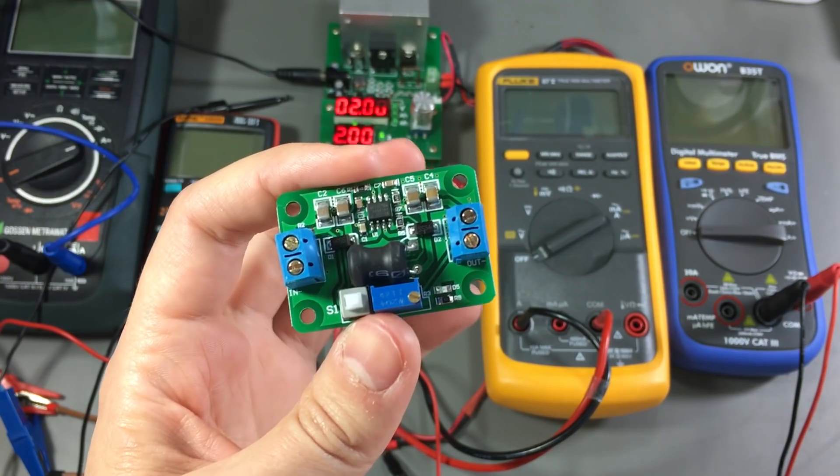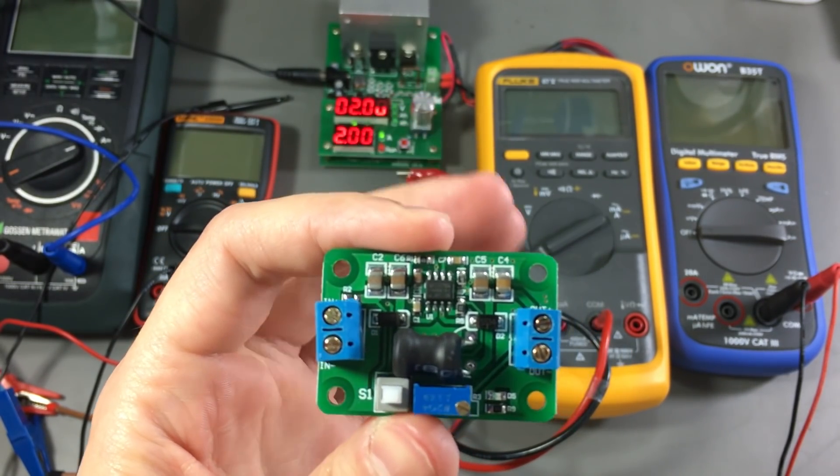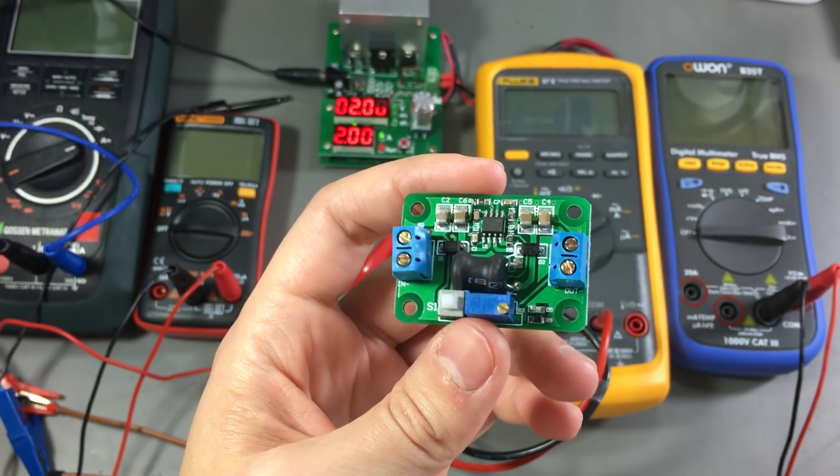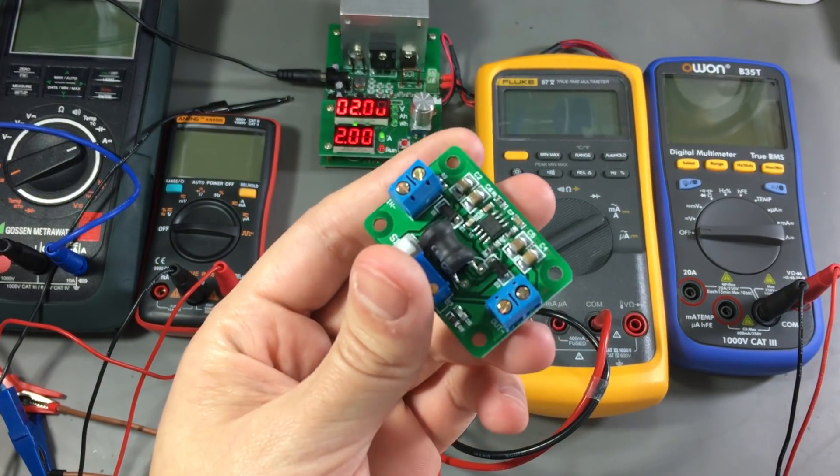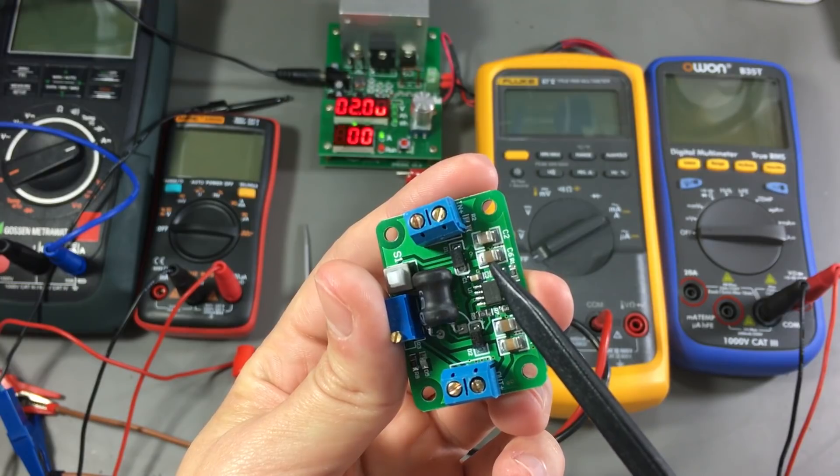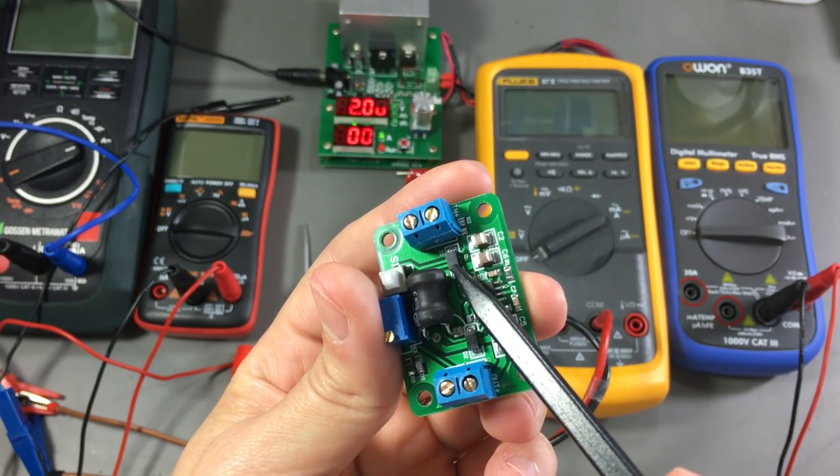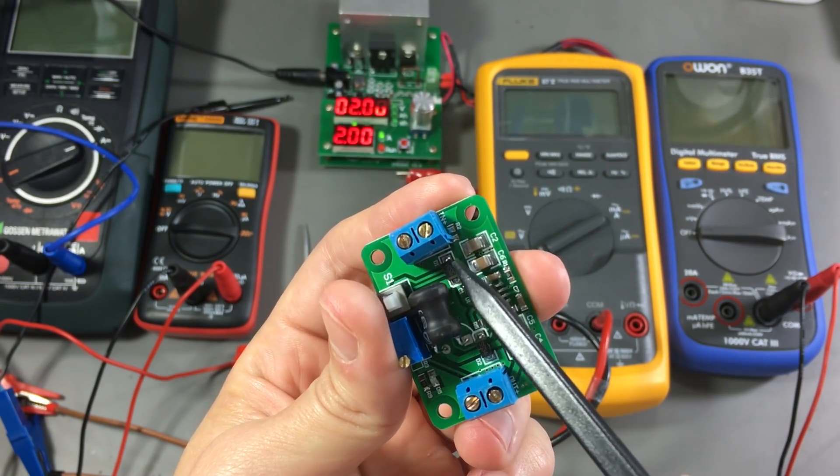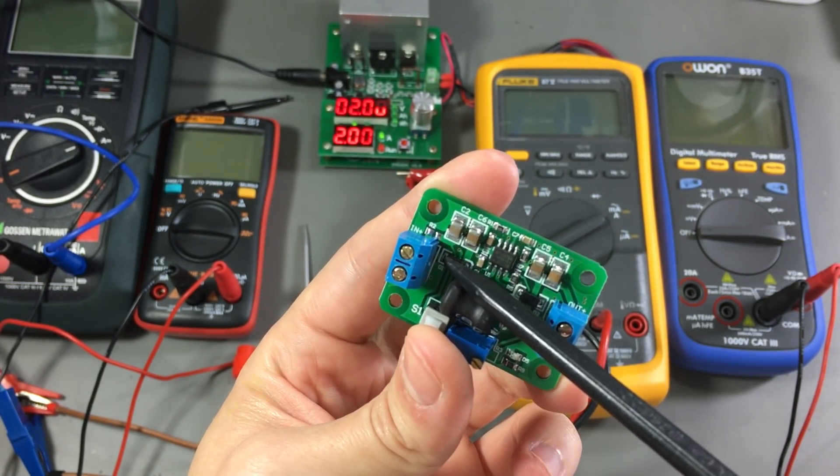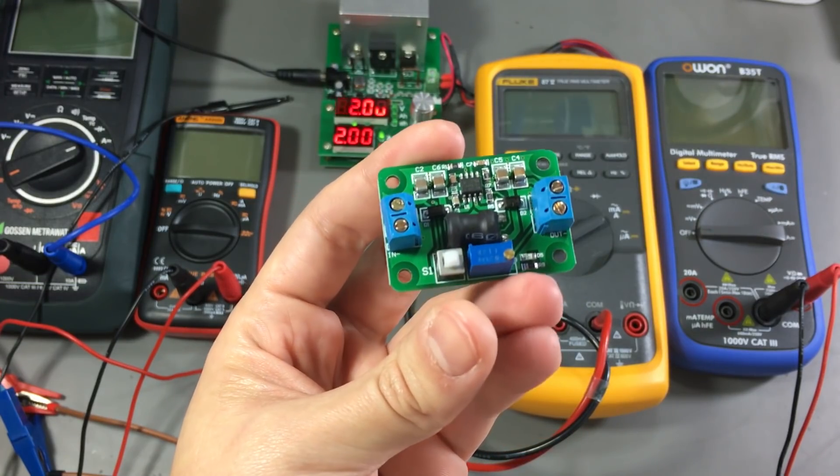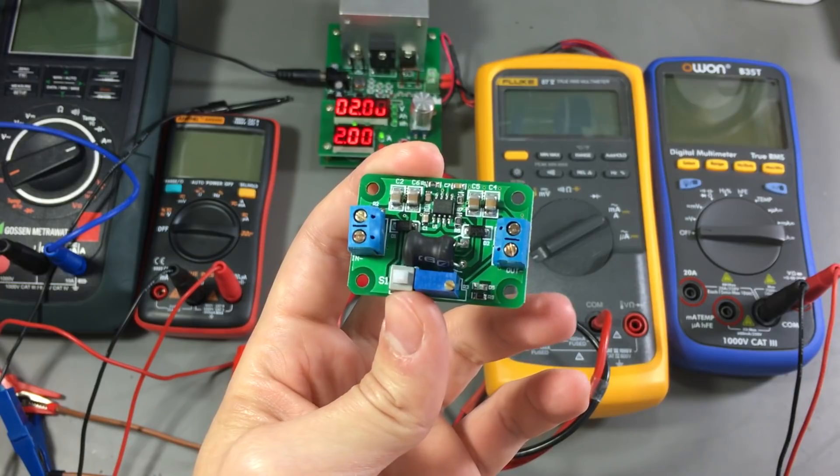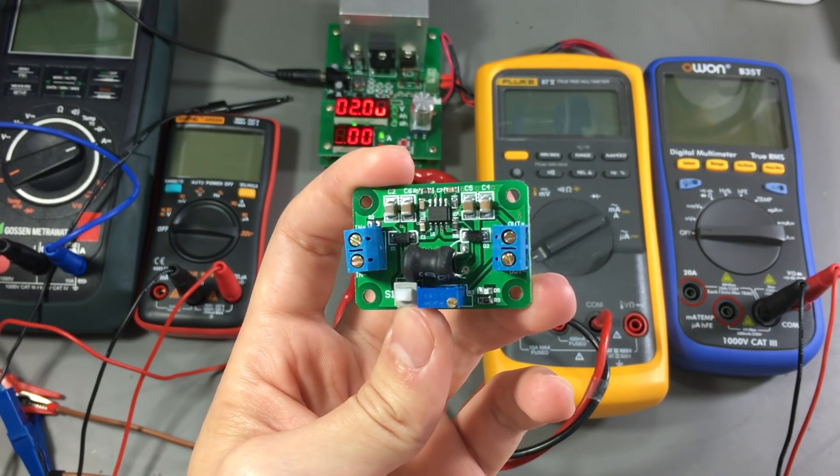But you might ask yourself, what can I do to improve the efficiency of this converter? And in this case, it's pretty simple. The first thing you need to do is to remove this input protection diode, replace this with a zero-ohm jumper resistor, or just a soldered blob, just make sure you don't short anything, and that should increase the efficiency.